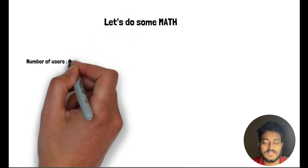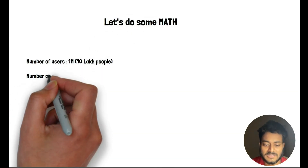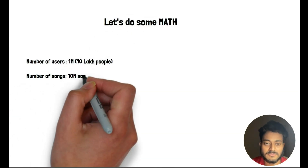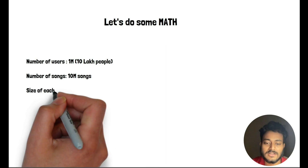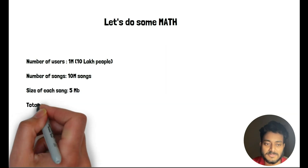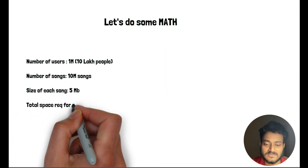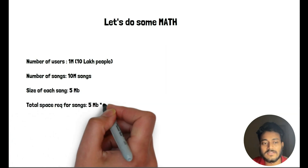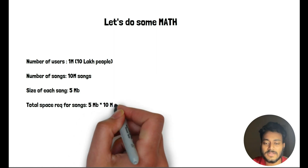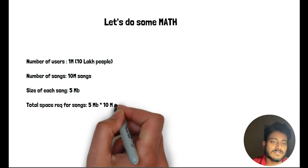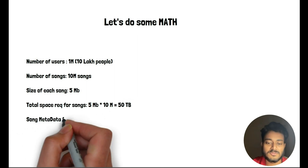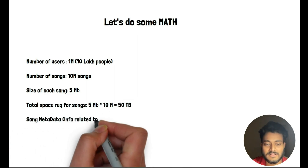Let's assume the number of users on our application initially would be 1 million, number of songs 10 million, and the size of each song should be 5 MB. The total space requirement for songs should be size of one song multiplied by the total number of songs, which comes out to be 50 TB.